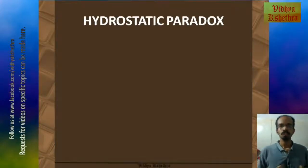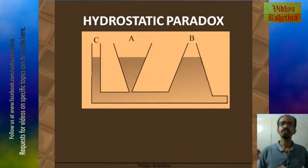Now we can see hydrostatic paradox. In this case we can see three water containers have different shapes and are connected at the bottom by a common tube.